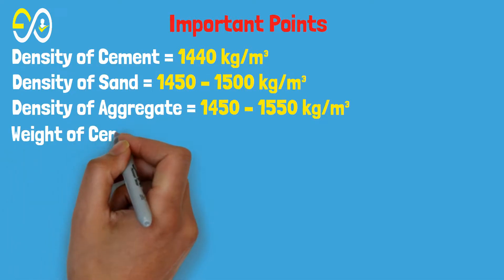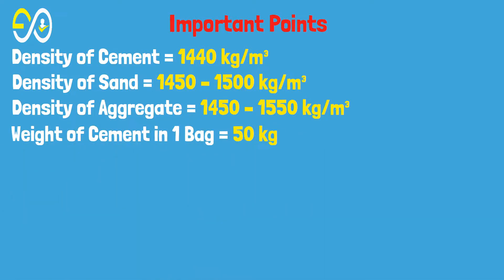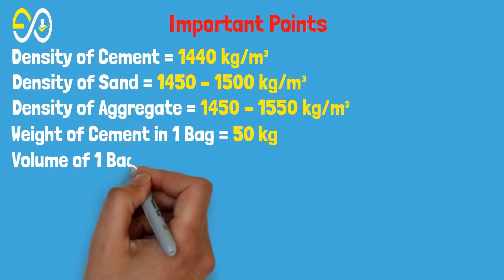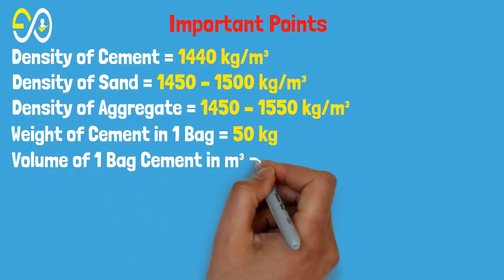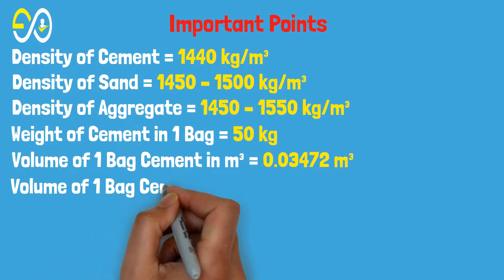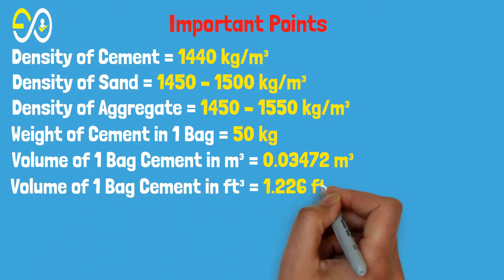Weight of cement in one bag equals 50 kg. Volume of one bag cement in cubic meter equals 0.03472 cubic meters. Volume of one bag cement in cubic feet equals 1.226 cubic feet.